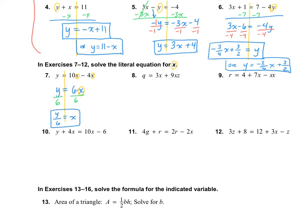Number 8: we're going to solve for X again, so I'll circle it. This one's a little tricky because we cannot combine these two terms together. The only way to solve for X is to use the opposite of the distributive property — factoring. So I'm going to write Q equals, pull the X out, and see what's left. That gives us X times 3, which is 3X, and X times 9Z, which is 9XZ.